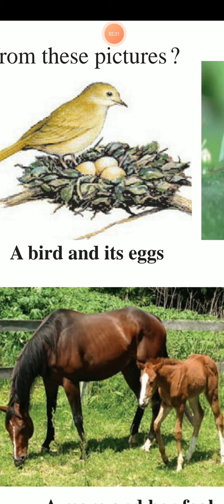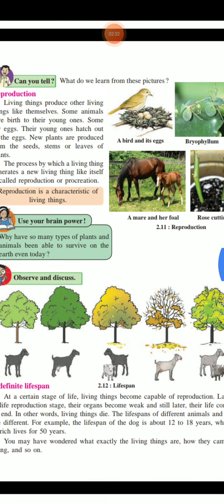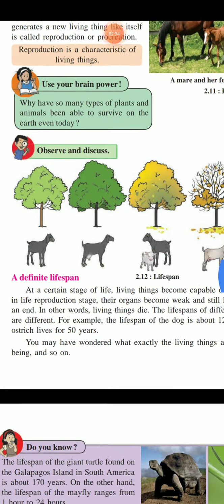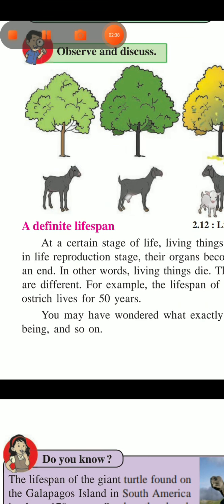The characteristic of reproduction is very important for a living thing. The next topic is a definite life span.